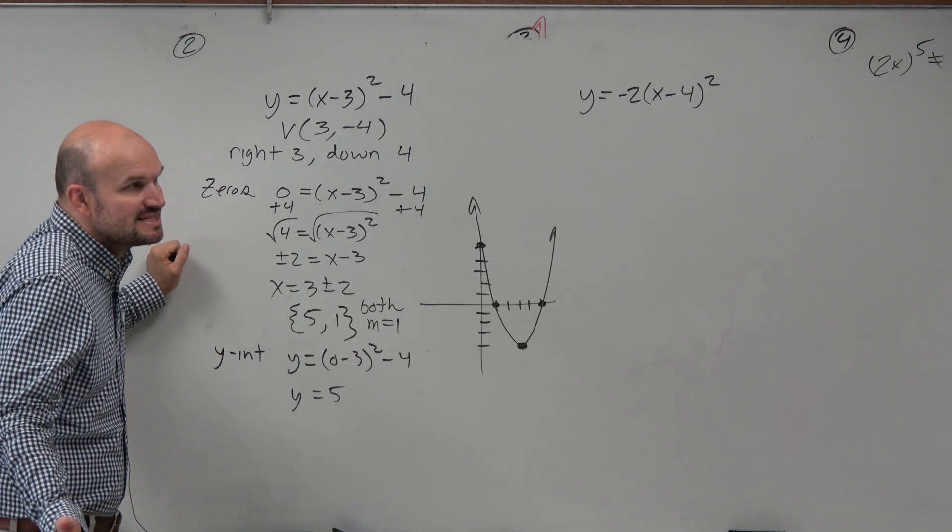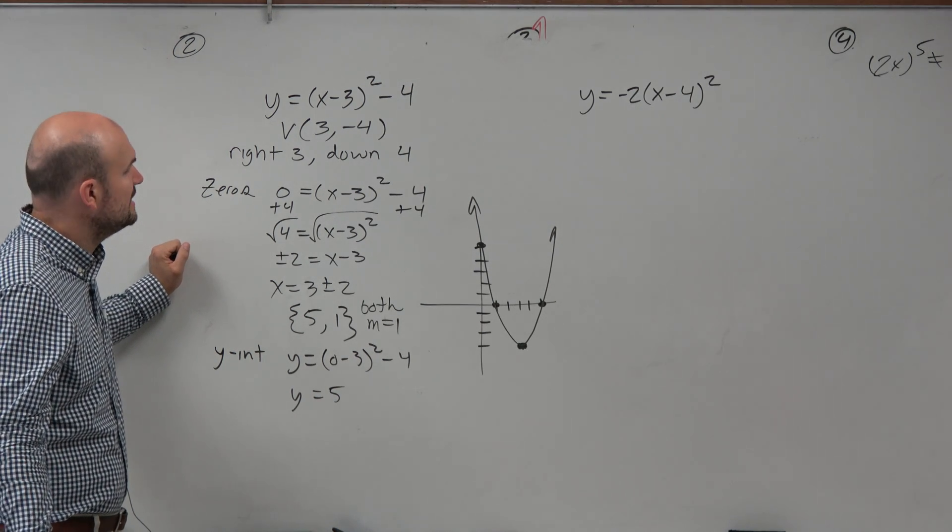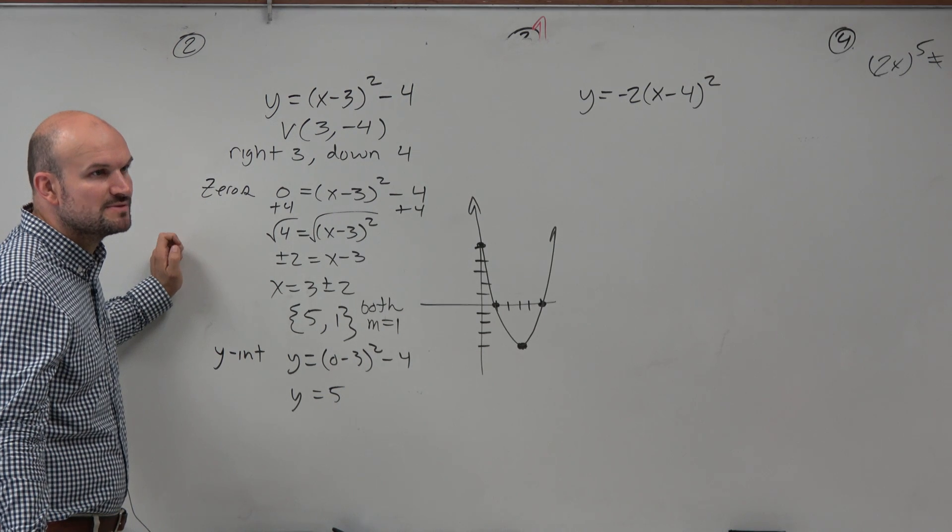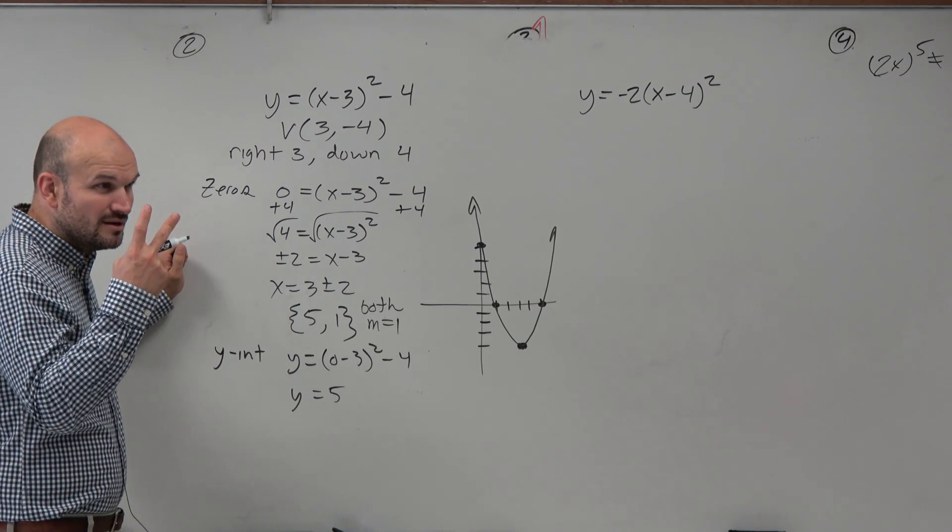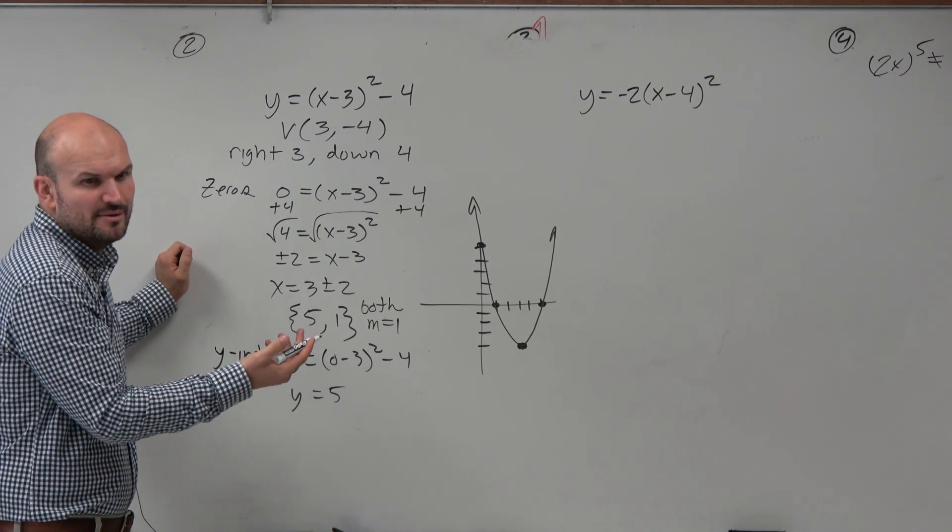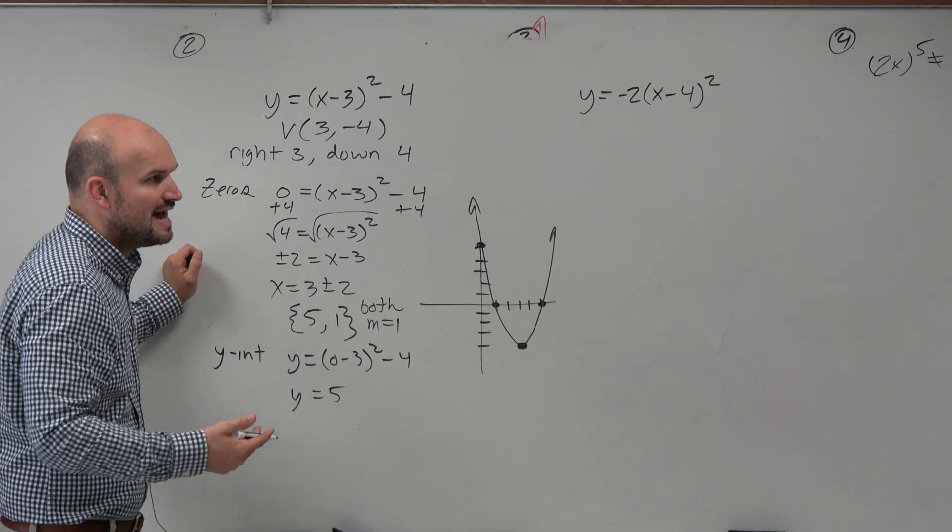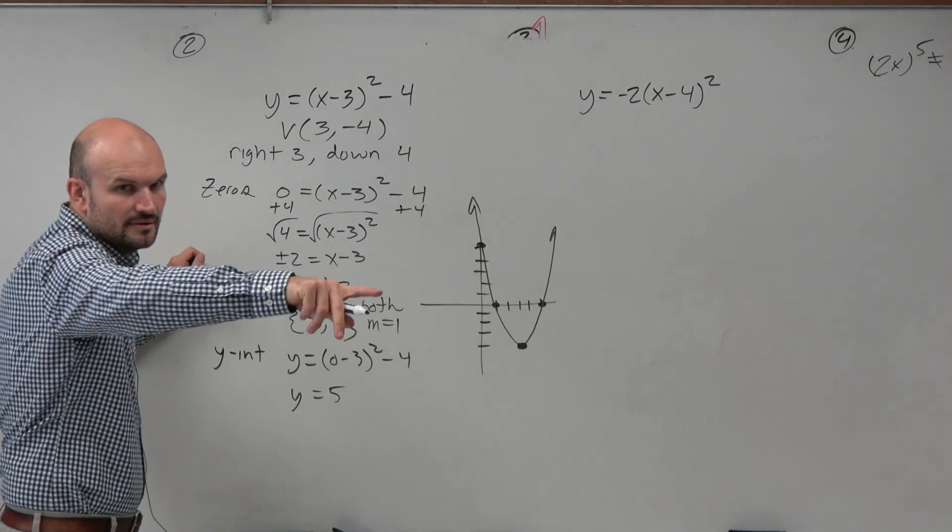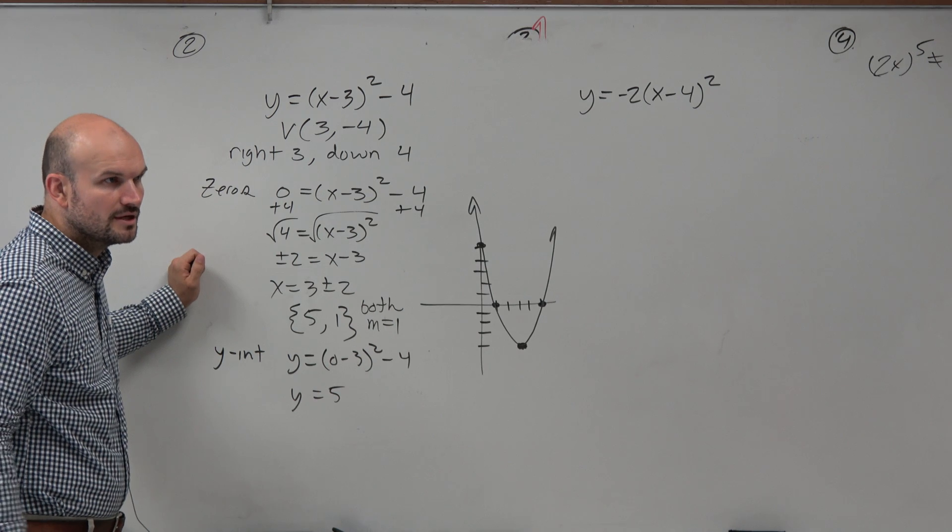They both have a multiplicity. And again, guys, that makes sense. Because what's the power of this? What's the degree of this polynomial? 2. Like, it wouldn't make sense for the multiplicity to be like 5 and 6 or anything like that.